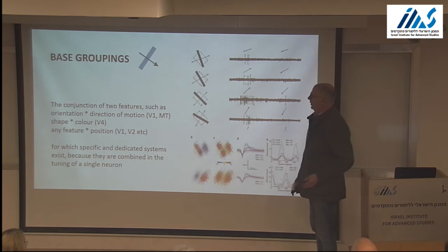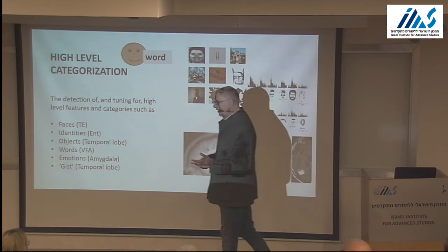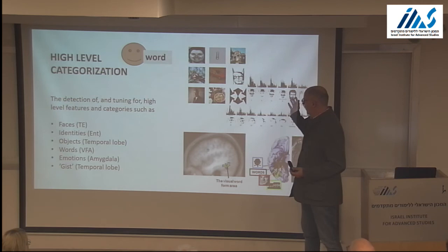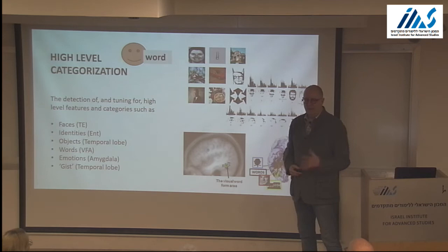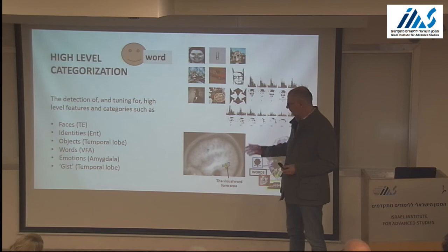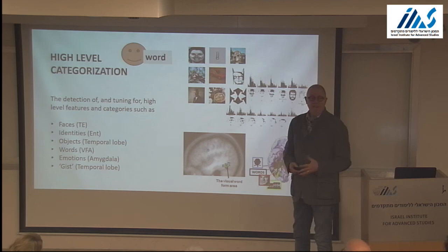Besides these fairly low-level feature detections, there is also lots of high-level feature detection going on in the visual brain. The most prominent example is probably face-selective cells — a face is a fairly complex constellation of features that needs a lot of intricate processing to detect. Nevertheless, we have single neurons that can do that. There are also famous recordings in humans — the Jennifer Aniston cell or the Bill Clinton cell — even more specific combinations of features detected by these cells. So identities, objects — we have very dedicated areas for the processing of words, and you might even argue that we have dedicated systems for detecting emotions and maybe gist.